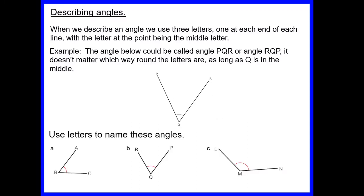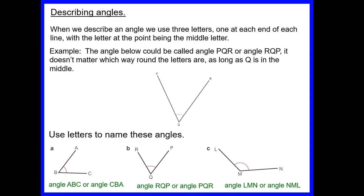Pause the video and have a go at writing down the names of those angles. The first angle can be called angle ABC or angle CBA. The second one can be called angle RQP or angle PQR. And the last one can be called angle LMN or angle NML.